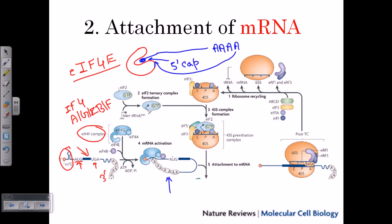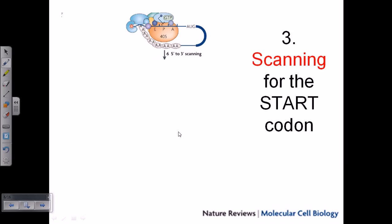Now we look at the third stage of initiation — scanning. The mRNA is now attached, but the tRNA is still not properly paired to the start codon, and the loop is still in place. What needs to happen now is finding exactly which sequence is the start codon. Once the start codon is designated, the fMet-tRNA — which carries a complementary anticodon to AUG — will be properly positioned at that AUG codon.